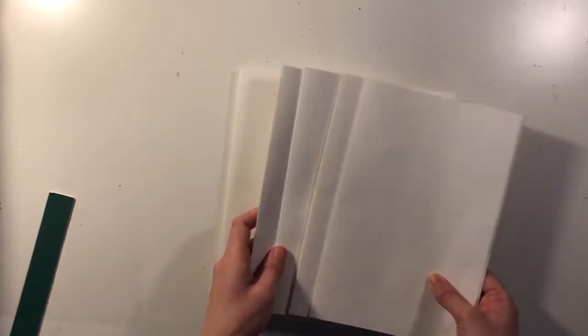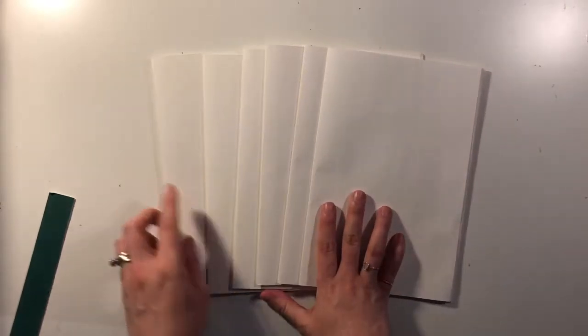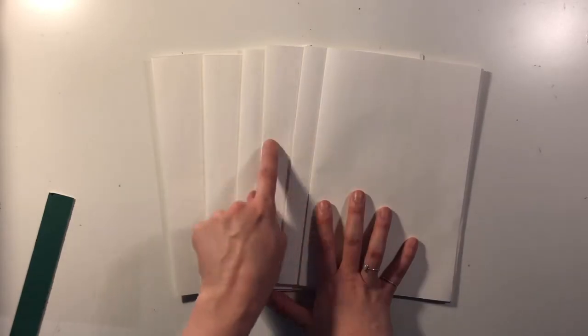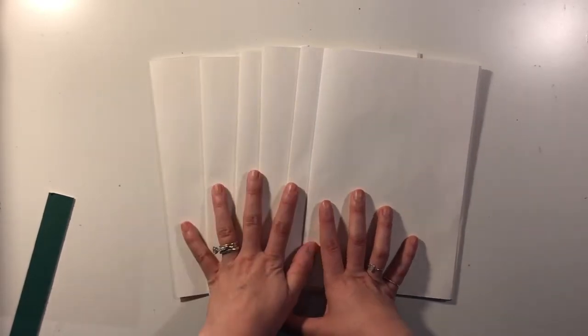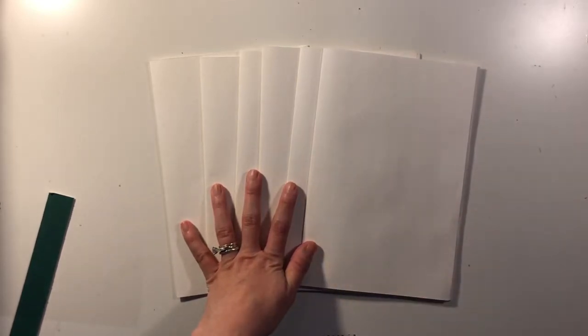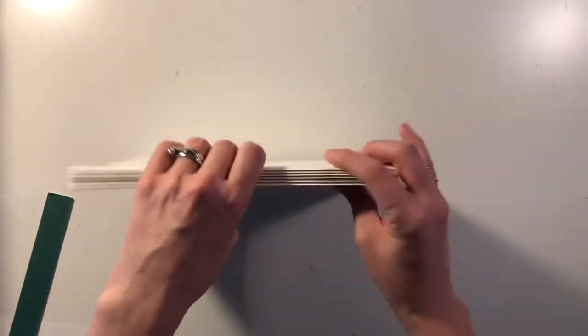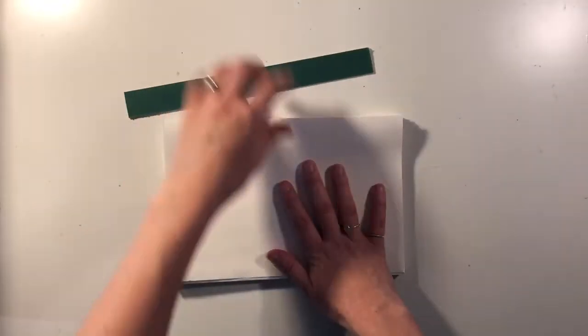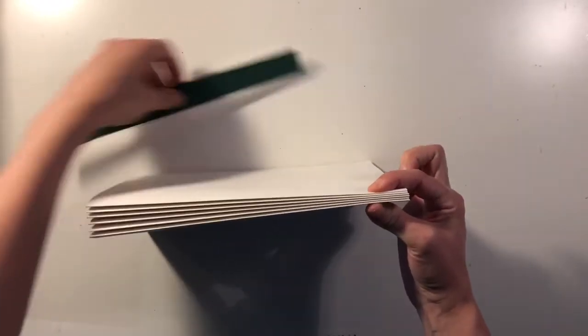Okay, so once you have your signature pages all folded together, since I'm using the thinner paper with signatures of five, that gives me one, two, three, four, five, six total signatures. But you will have I think ten if you do signatures of three with the thicker paper. What you want to do is you're going to stack those up nice and neat together.